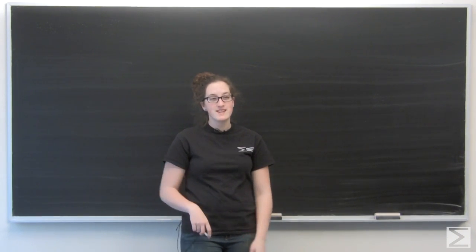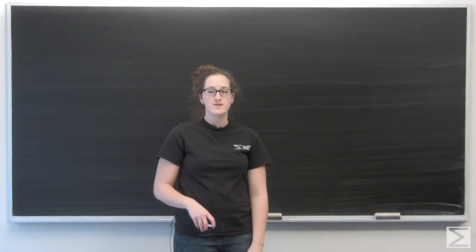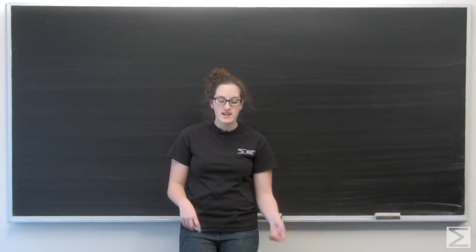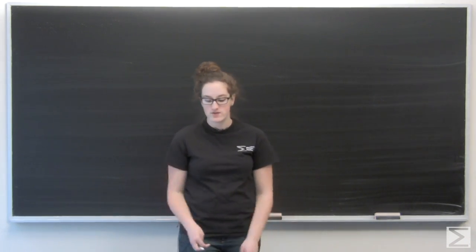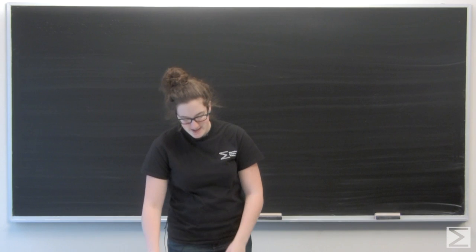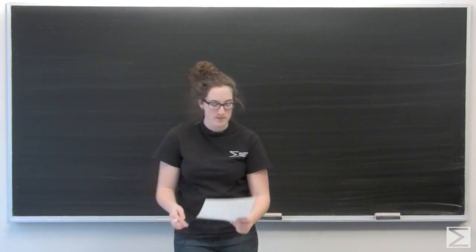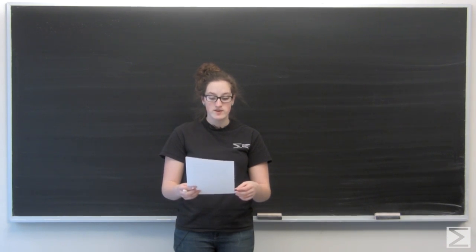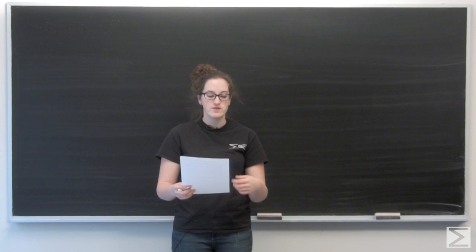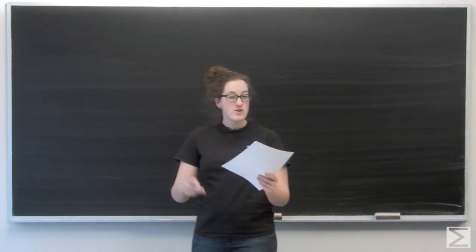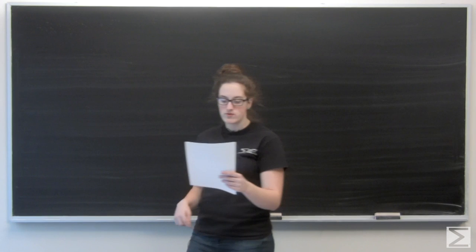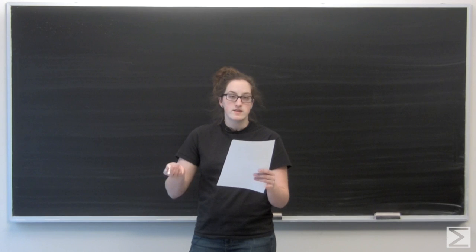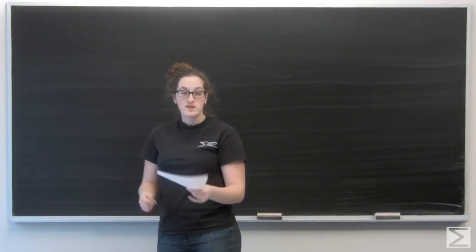In this video we're going to take a look at another released free response question off of the AB Calc exam. This particular question was on the exam in 2008 and it came off of the AB version. It was a calculator question, so I have my calculator handy. Oil is leaking from a pipeline on the surface of a lake and forms an oil slick whose volume increases at a constant rate of 2000 cubic centimeters per minute. I'm going to write down dV/dt equals 2000 cubic centimeters per minute.